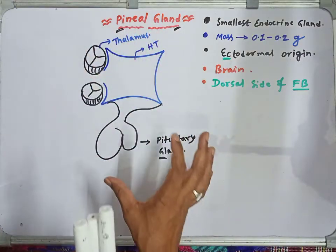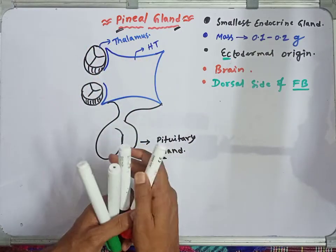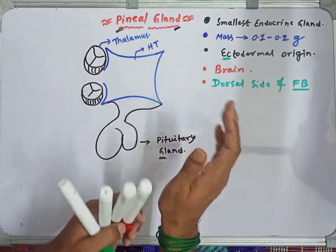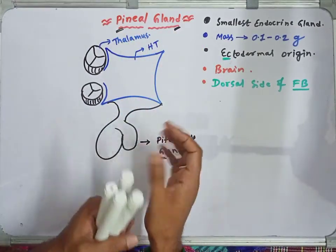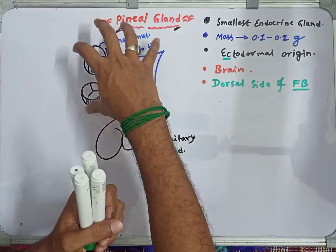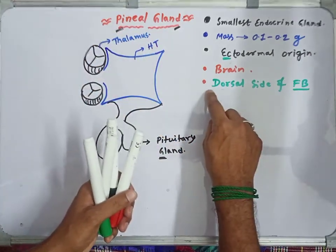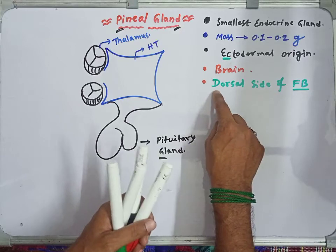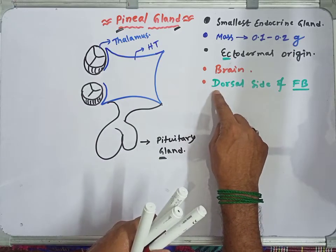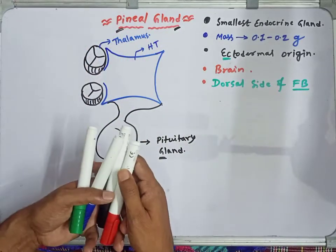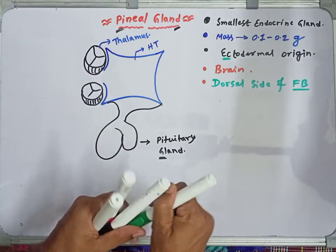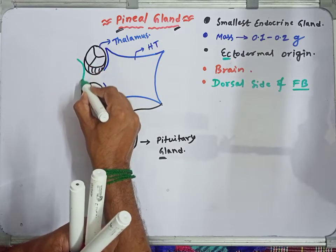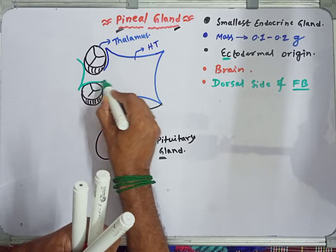Now we'll focus on the pineal gland. Before showing the pineal gland, it was necessary to show the surrounding structures because the forebrain has many parts and layers. The forebrain part I have drawn is the diencephalon. According to NCERT, the pineal gland is situated and located on the dorsal side of the forebrain — and this is the forebrain I have drawn.